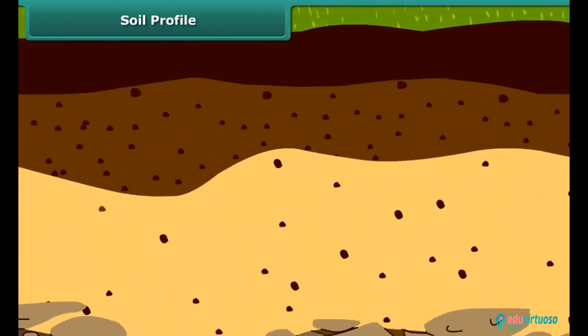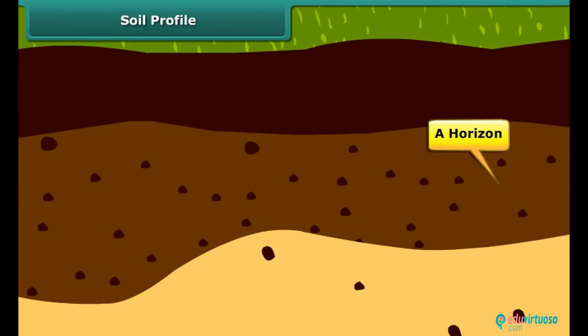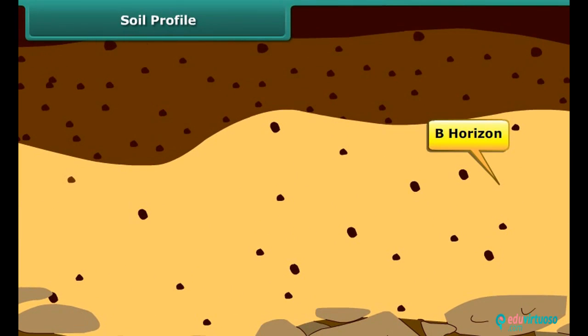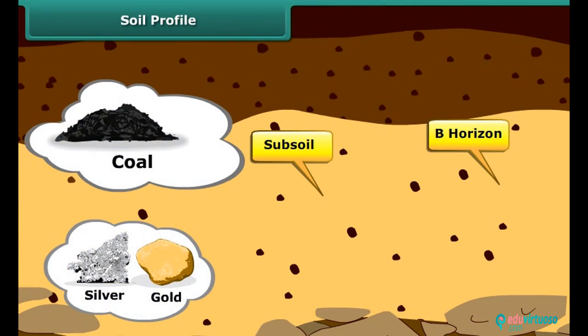The second layer is the A horizon, commonly known as topsoil. This layer has a high concentration of organic material called humus. Many living organisms live in the topsoil. The third layer is the B horizon, commonly known as subsoil. This layer contains more minerals but less humus.